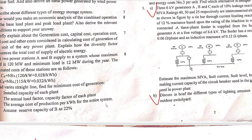Hello and welcome to my channel. Today I'm back with another important numerical on power plant design. The problem has two power stations A and B supplying a system whose maximum load is 120 megawatt and the minimum load is 12 megawatt during the year.